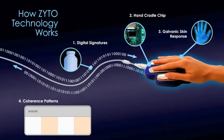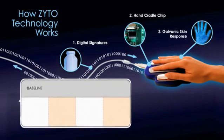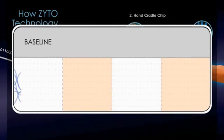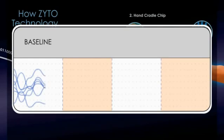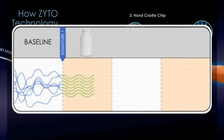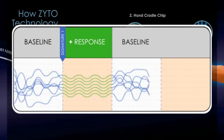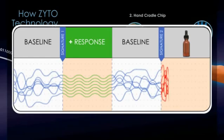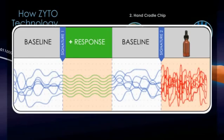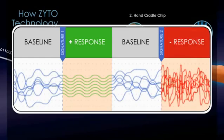Coherence is a state where two or more things exist without conflict. By tracking multiple inputs, ZYTO technology can calculate shifts in coherence as the body responds to each digital signature. Signatures that create greater coherence than the baseline are given a positive score, and signatures creating less coherence than the baseline are given a negative score.